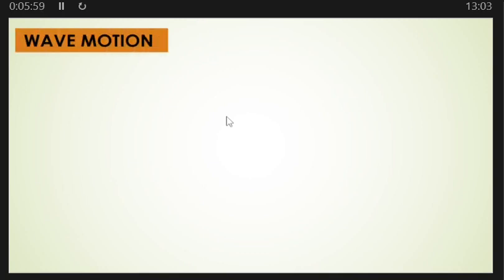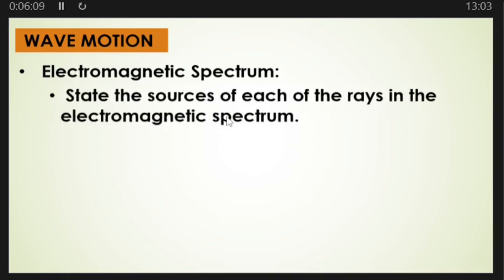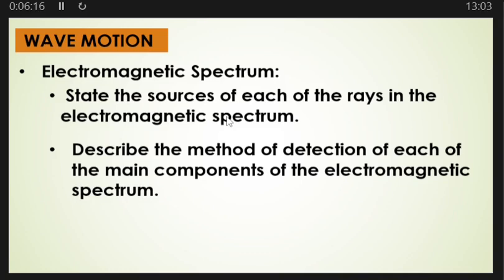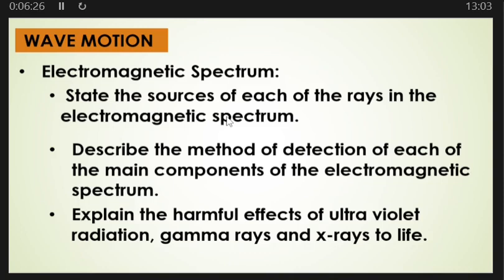You must also study the topic of wave motion. Under wave motion, look at the electromagnetic spectrum. You must be able to state the sources of each of the rays in the electromagnetic spectrum, describe the method of detection of each component of the electromagnetic spectrum, and explain the harmful effects of ultraviolet radiation, gamma rays, and X-rays to life.